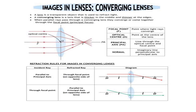Here is a summary diagram of the terms used in lenses. The focal point is also called the principal focus — the point where light rays converge. The optical center is denoted C. The principal axis passes through the optical center and is parallel to incoming rays of light.